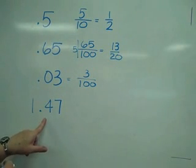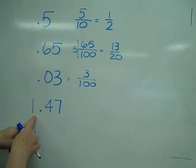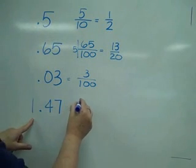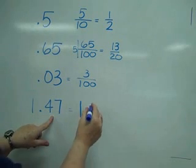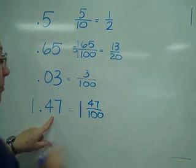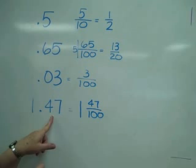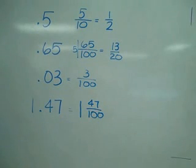Now looking at 1 and 47 hundredths, the 1 has nothing to do with the decimal. I am going to have the 1 is just hanging around. Then the 47 hundredths becomes part of the fraction. 47 hundredths, the 47 is nothing else goes into it, and 100, so this would be my answer.